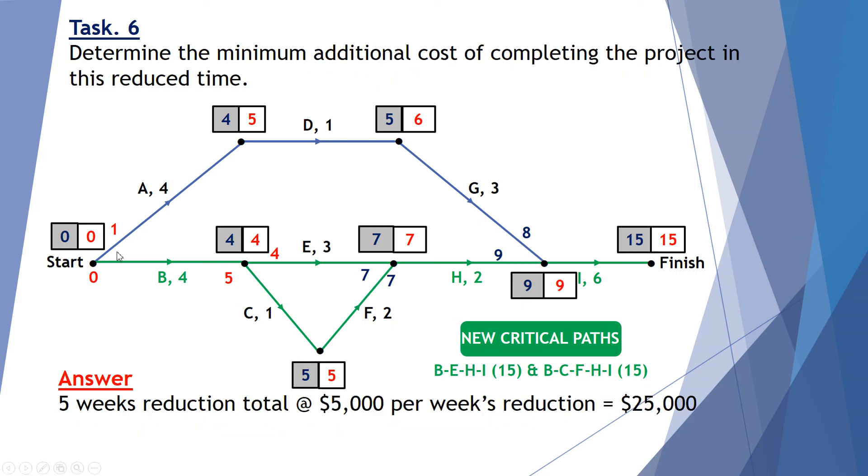Sorry, this is the final question. Determine the minimum additional cost of completing the project in this reduced time. So we reduced 5 week reduction. 2 for C, 2 for F which gives us 4 weeks and 1 for E. Each at a week's cost of $5,000 for each reduction of a week. So 5 lots of $5,000 gives me a total cost of $25,000 to reduce this project down to 15 weeks.